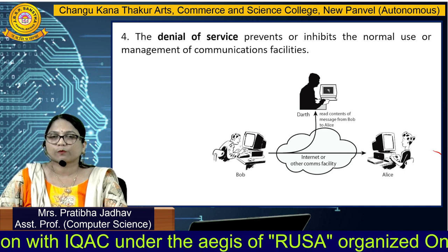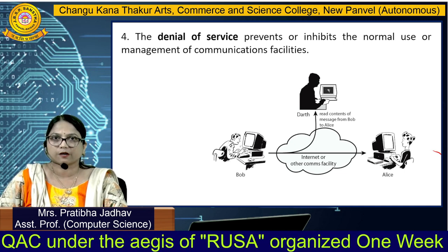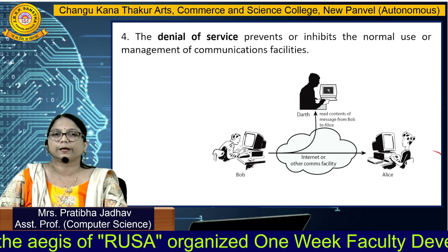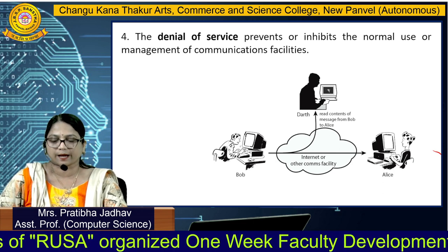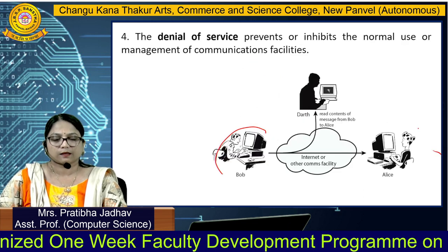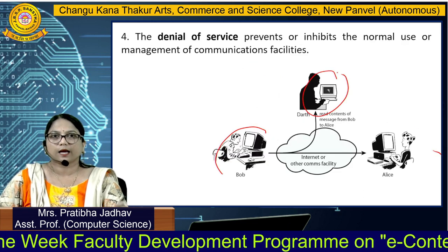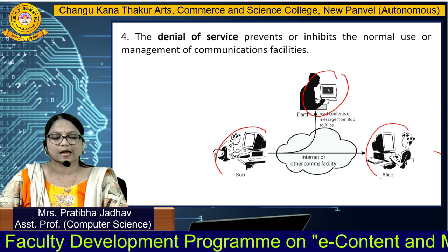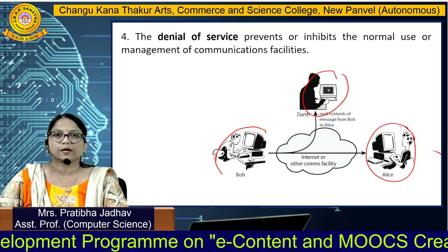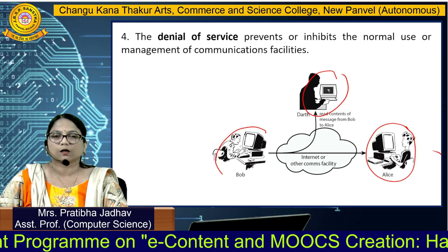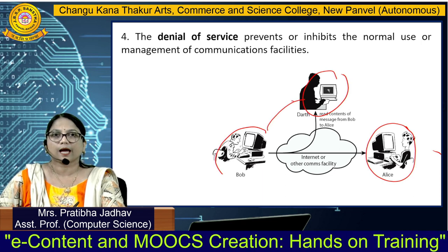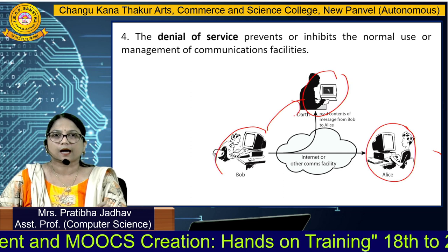Next is denial of service, which prevents or inhibits the normal use of management. For example, Bob and Darth are communicating with each other, while Alice is the authorized person. Whatever communication is going on between Bob and Darth will be accessed by Darth.